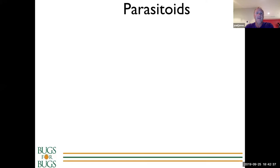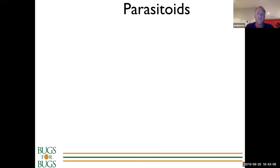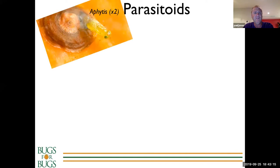I'm going to run through some of the products we are dealing with. First is probably one of the first products Bugs for Bugs developed - Aphytis, for red scale control, used a lot in the citrus industry. It's a classic case - Aphytis is one that's diminished somewhat because chemistry has come in and cleaned up a lot of red scale problems. But over time resistance will develop and red scale will likely come back, and growers will probably look at Aphytis again as a biocontrol agent.